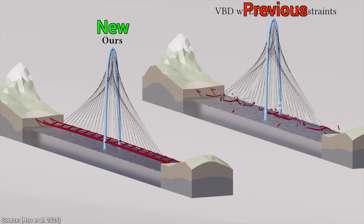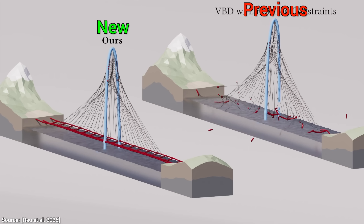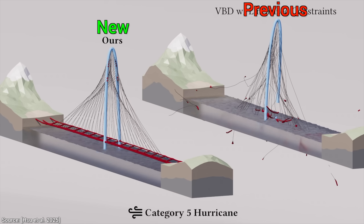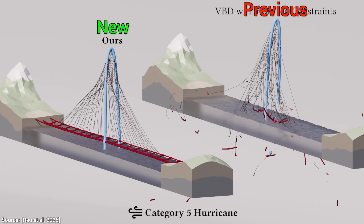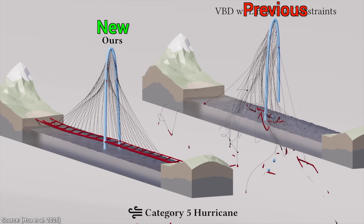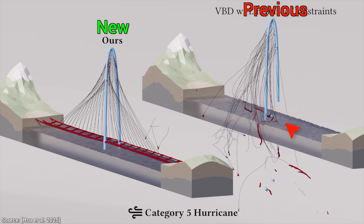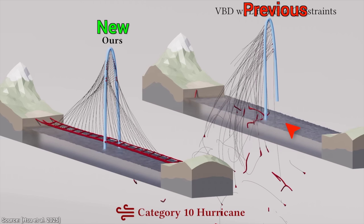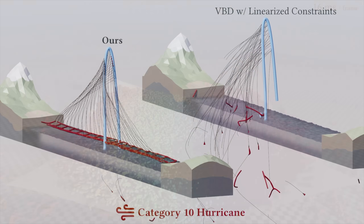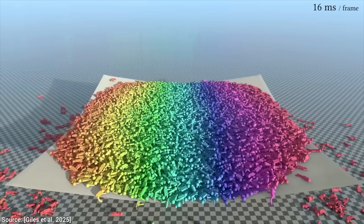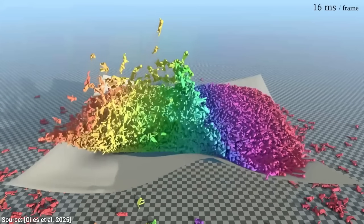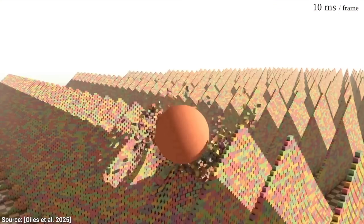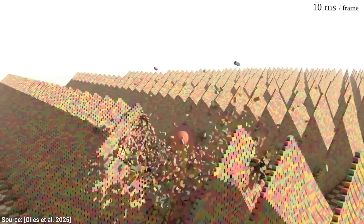Then we'll try to do something extreme. I'll try to explain how it works — that will be something. This is Vertex Block Descent, something we've talked about here already, that is a blockbuster research paper.